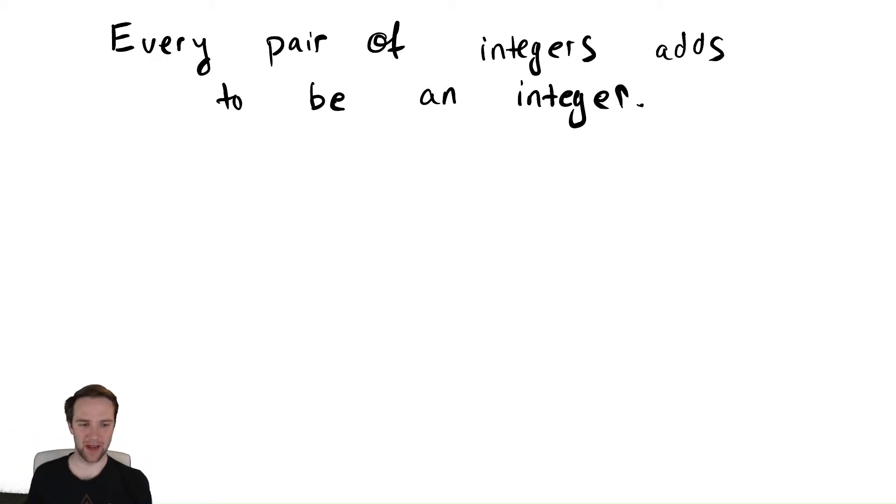you might want to say every pair of integers adds to be an integer. Or something like this, where you have clearly two things going on. And there might be some way to write this down with other predicates, but in practice, you're talking about two things, right? Two different integers add to be a different integer.